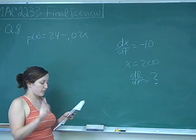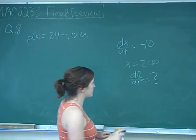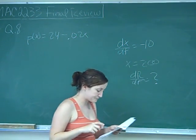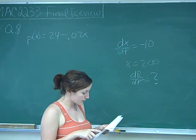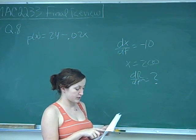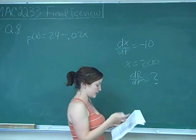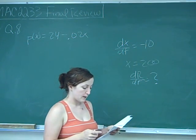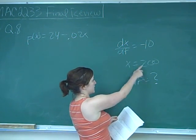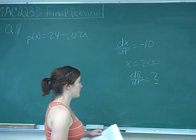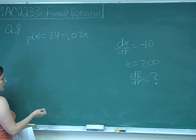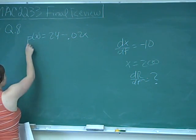If production is decreasing by 10 items per week, that's dX over dT, and that's negative 10. We want to find the rate at which revenue is changing, so we're looking for dR over dT when weekly production is 200 items — that is, when X is 200.